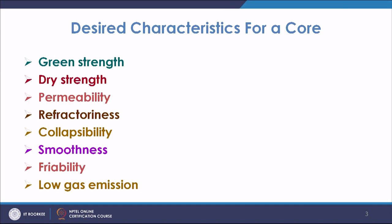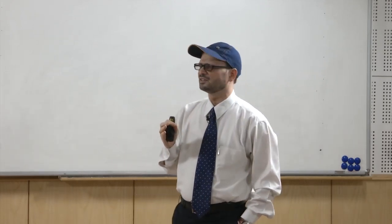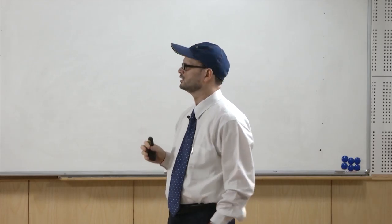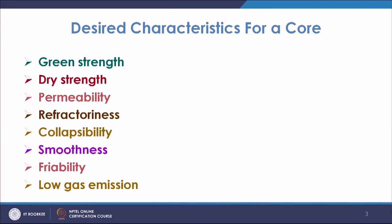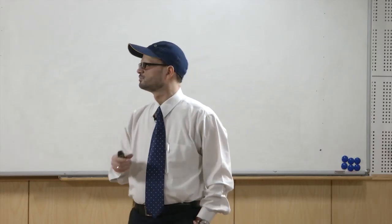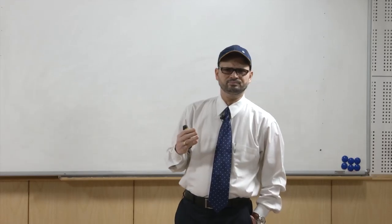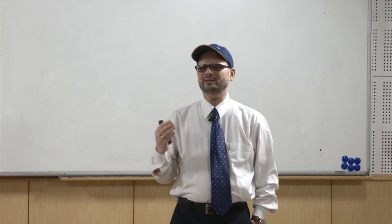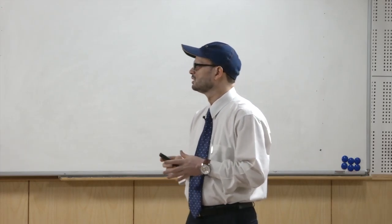Dry strength is the strength when the core is dried, so that it can withstand the pressure of the metal it is subjected to. Permeability is the property by which it can allow gases to escape through it. Refractoriness is the ability to withstand high temperature without fusing. Collapsibility means cores also need to be collapsible so that after solidification they do not interfere with the metal — they should crack and collapse easily so you can remove them easily.